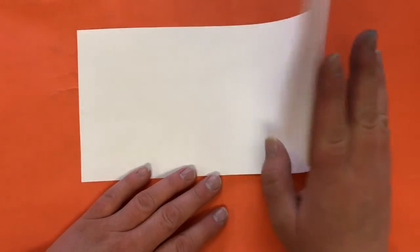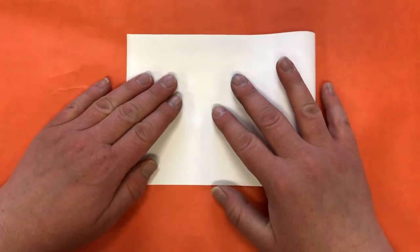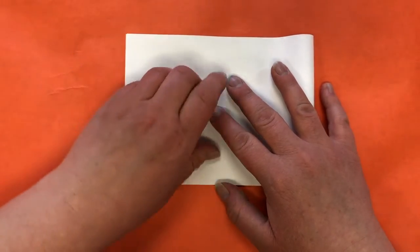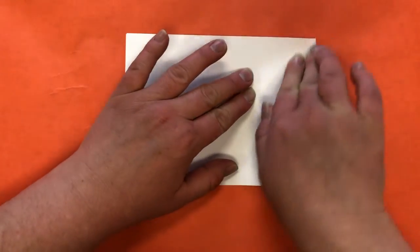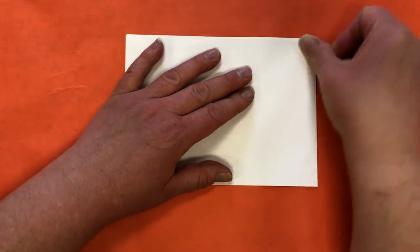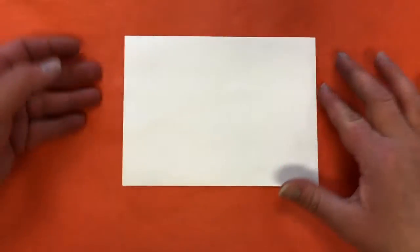So what you're going to do first to make this accordion book is you're going to fold this paper in half this way. Line it up really nice. Get an adult to help you if you want. I folded all the books for everybody else, so definitely get an adult to help you.